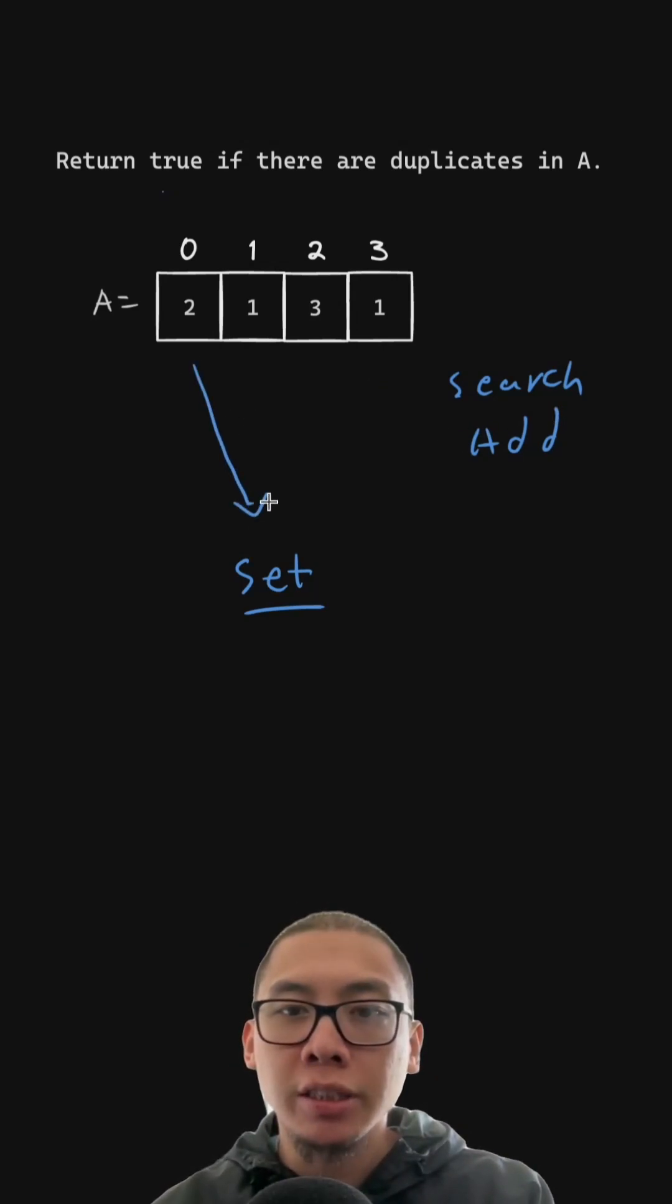So for example, 2 doesn't exist in our hash set, so we'll add it. Same with 1, 3, and when we get to 1, we see that 1 already exists, so we could just return true.